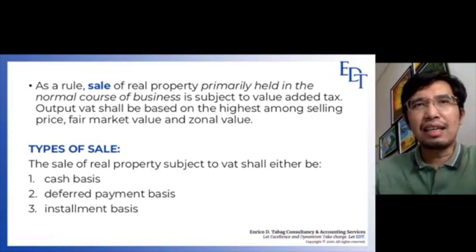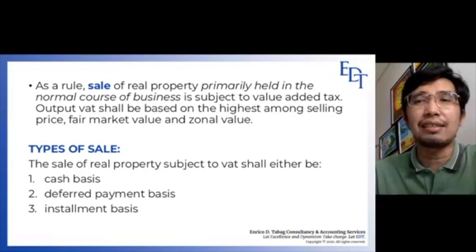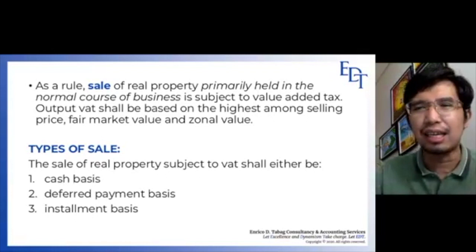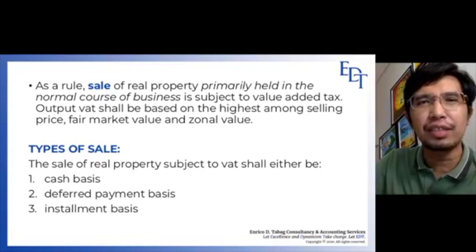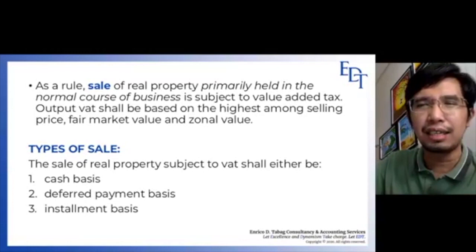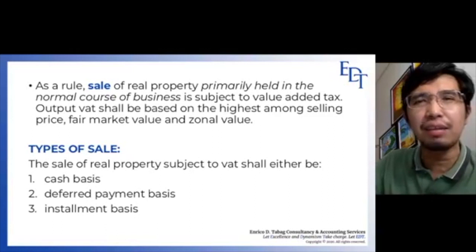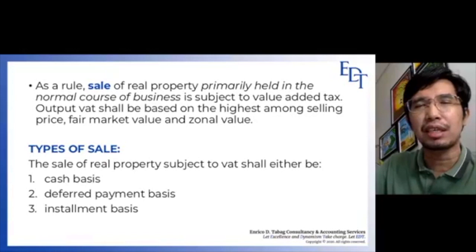So to summarize: how much of the output VAT shall be reported or remitted to the BIR depends on the type of sale. If it is a cash sale, we report all of the output VAT during the month of sale — 12% of the selling price, zonal, or fair market value, whichever is highest. If it is not a cash sale, there are two kinds: deferred sale and installment sale. The classification depends on the ratio of initial payment over selling price. If the ratio is not more than 25%, it is an installment sale; if the ratio exceeds 25%, it is a deferred sale.